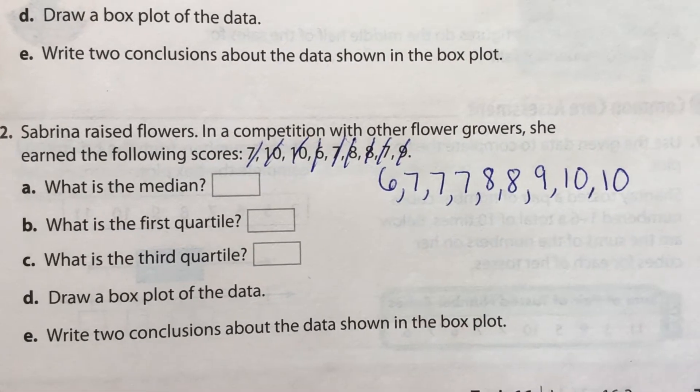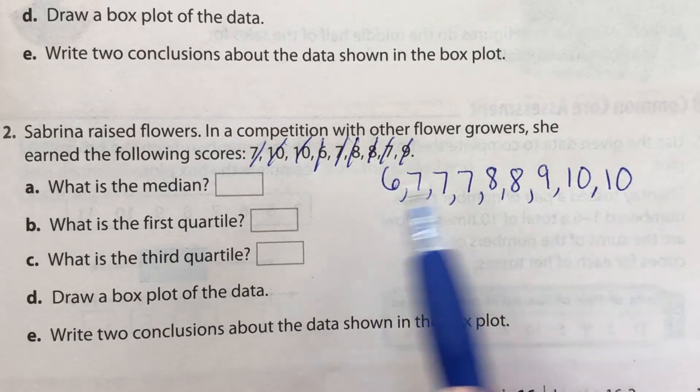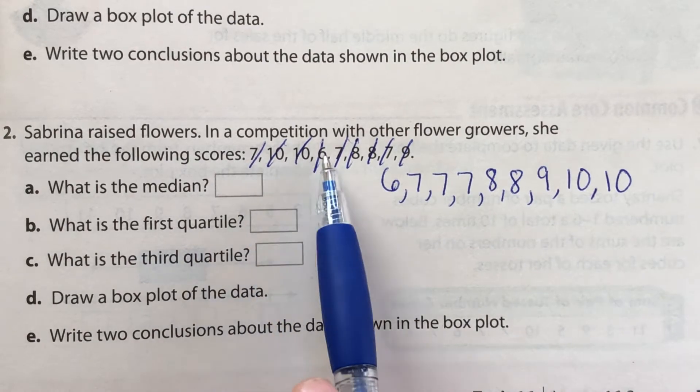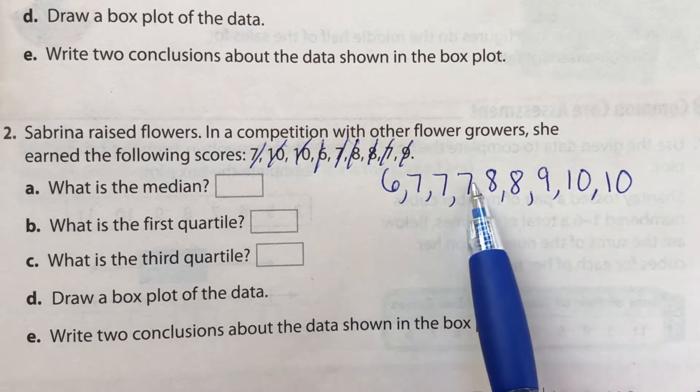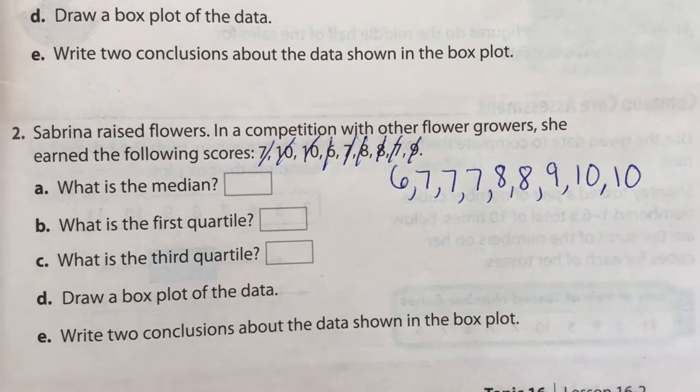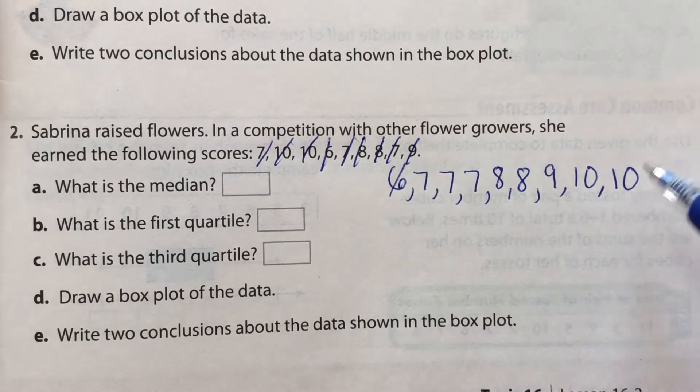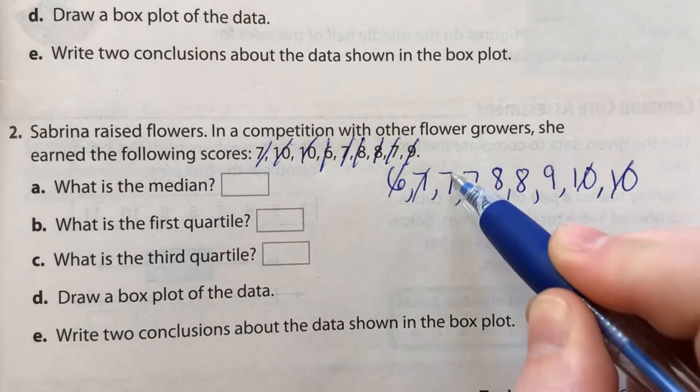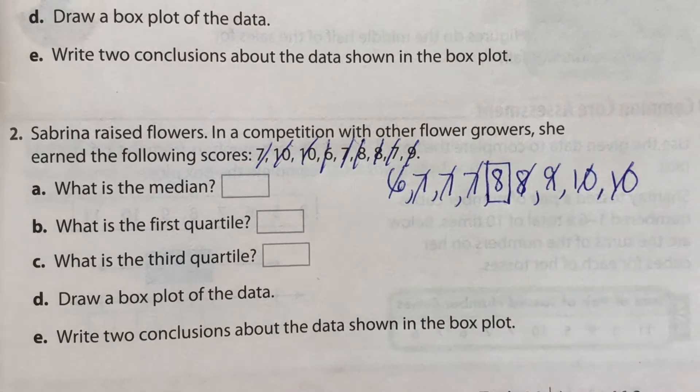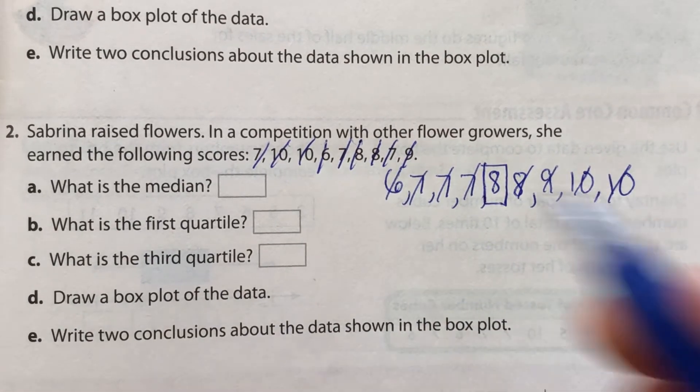All right, so that is our data ordered from least to greatest. And to find the median, we're just going to cross them out. So let me just double count. One, two, three, four, five, six, seven, eight, nine. Perfect. It doesn't hurt to just double check. And we'll cross them out. One, one, two, two, three, three, four, four, five. So our median is eight.